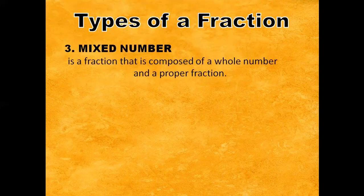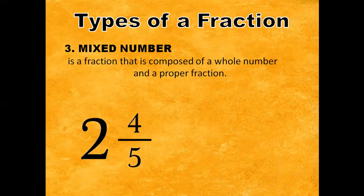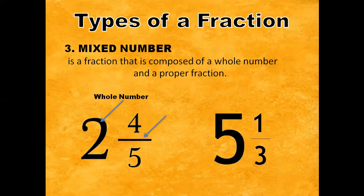Mixed number is a fraction that is composed of a whole number and a proper fraction. For example, we have two-and-four-fifths and five-and-one-third. Two is the whole number and four-fifths is the proper fraction.